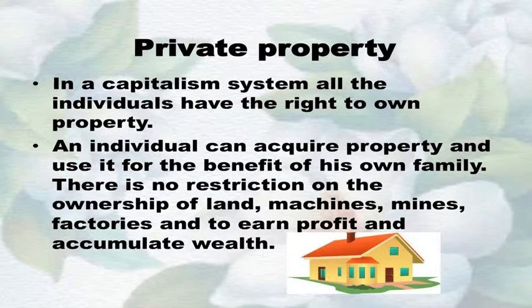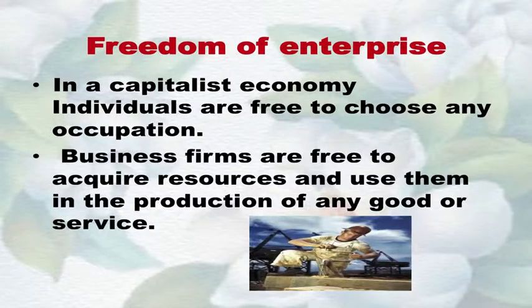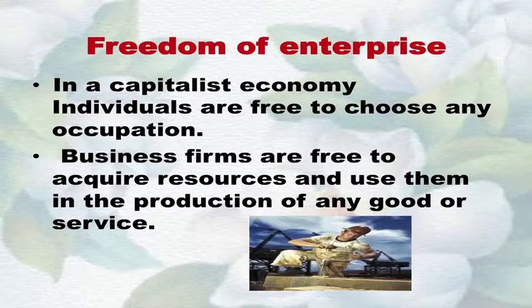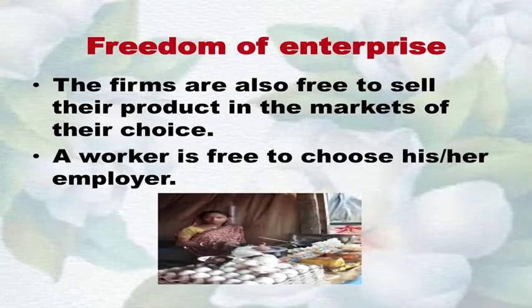After the death of a person, property or wealth is transferred to legal heirs. Thus, the institution of private property is sustained over time by the right of inheritance. Number two: Freedom of enterprise — in a capitalist economy, the government does not coordinate production decisions of individuals. Individuals are free to choose any occupation. Business firms are free to acquire resources and use them in the production of any good or service, and are also free to sell their products in the markets of their choice.